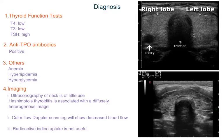In females, hypothyroidism affects the menstrual cycle and they will present with heavy menstrual bleeding. To diagnose Hashimoto's thyroiditis, we check thyroid function tests: T4 and T3 levels will be lower than normal and TSH will be higher than normal. Anti-TPO antibodies can be checked — although not routinely tested, they will be positive in Hashimoto's thyroiditis.